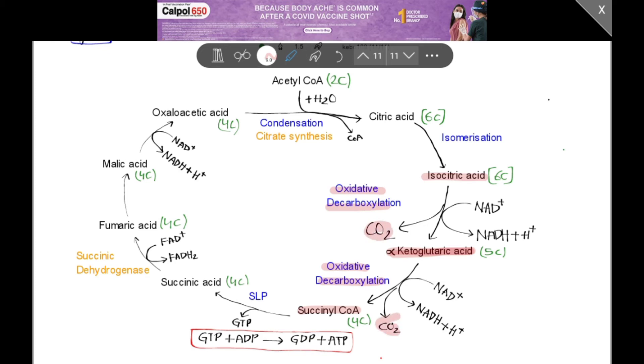Third, there are 3 points where NADH + H⁺ are formed. One is here, second, and third. There is only one point in the whole cycle where FADH₂ is formed, that is from succinic acid to fumaric acid. Another most important point is, succinic dehydrogenase is present in the inner mitochondrial membrane, whereas all the other enzymes like citrate synthase and others are present in the matrix itself.